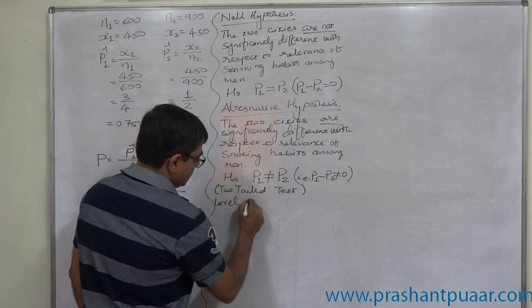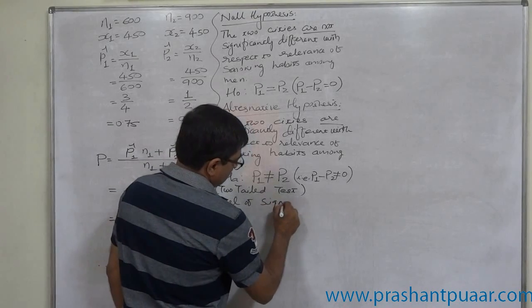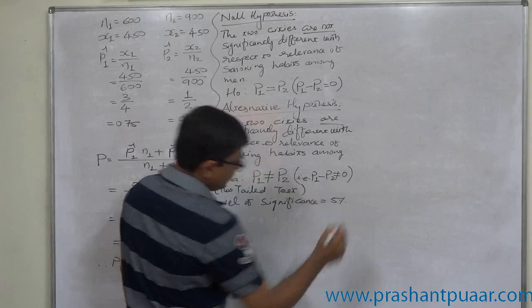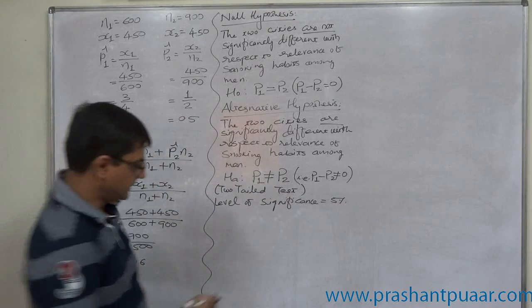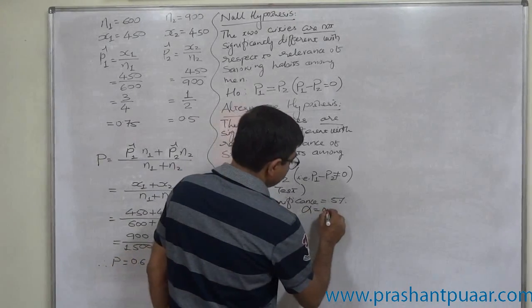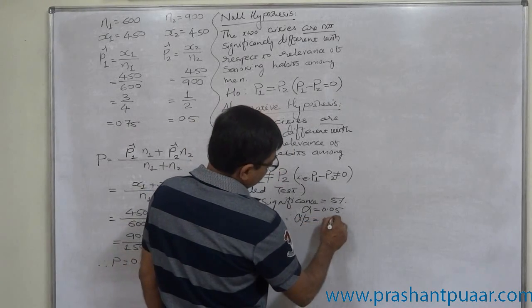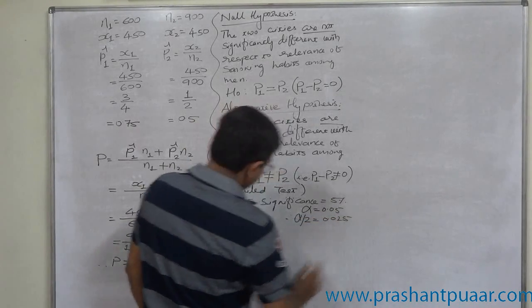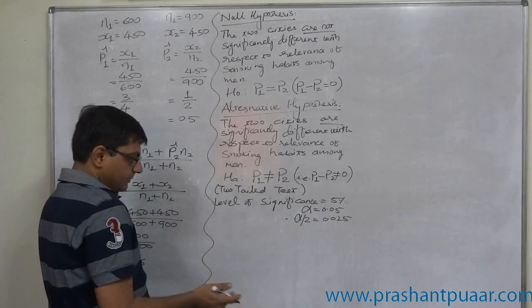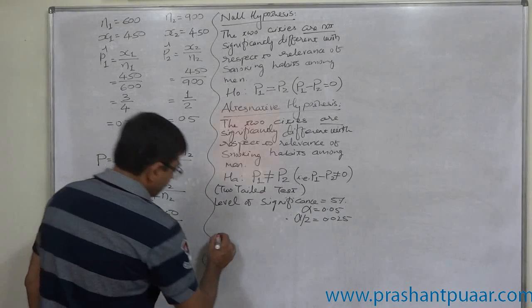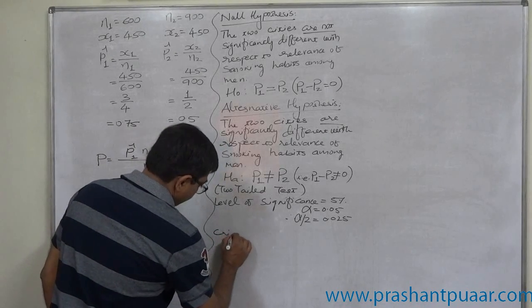Level of significance: no specific information, so we are going to take it as five percent. So alpha is 0.05. Since this is two-tail test, alpha by two, that is 0.025. Z test, that means degrees of freedom infinite, no need to write it separately. Just write critical value: 1.960.